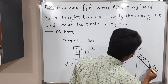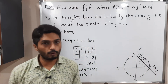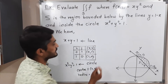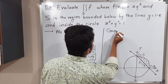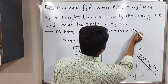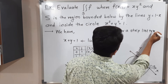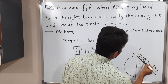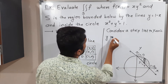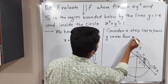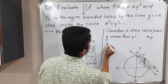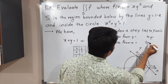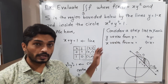After getting the region of integration, we consider a strip. We have two options: either parallel to the y-axis or parallel to the x-axis. Here I will consider a strip parallel to the y-axis. So we write: y varies from y = ... to y = ..., and x varies from x = ... to x = ...